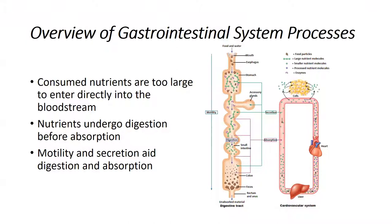Two other processes involved in the GI system which aid in digestion and absorption are motility and secretion. Motility is the movement of substances through the GI tract. Secretion is basically mucus being released into the GI tract to aid in that motility. The more slippery, moist, and lubricated the GI tract is, the easier these substances can move through and be absorbed across the epithelial layer.